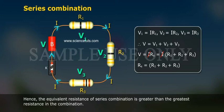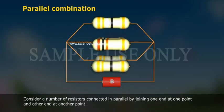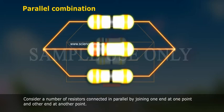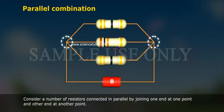Hence, the equivalent resistance of the series combination is greater than the greatest resistance in the combination. Parallel Combination: Consider a number of resistors connected in parallel by joining one end at one point and the other end at another point.